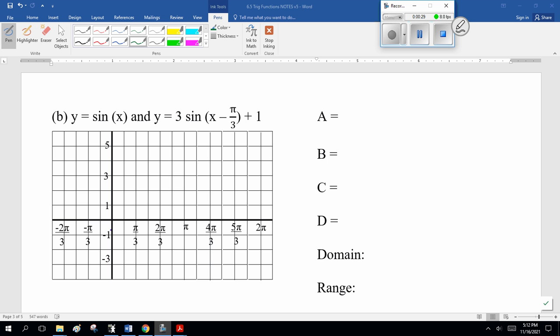While you're doing that, for the function here, a is 3, b is 1, c is pi over 3, and d is 1. The original function, something like this, half of it in between is 1, so we'll go 1.